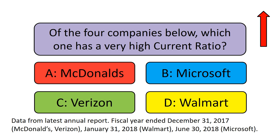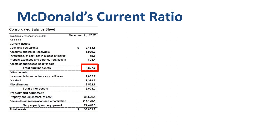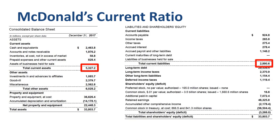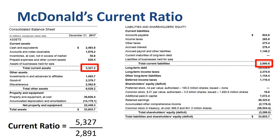Let's review the balance sheets and calculate the current ratios. McDonald's: current assets of $5.3 billion on total assets of $33.8 billion — only 16% of assets are current. Within current assets, cash and equivalents, accounts and notes receivable, and prepaid expenses are the most sizable. On the liabilities side, $2.9 billion of current liabilities, mostly accrued payroll and other liabilities and accounts payable. The current ratio is 5.3 divided by 2.9, which equals 1.8 — every dollar of current liabilities is covered by $1.80 of current assets.